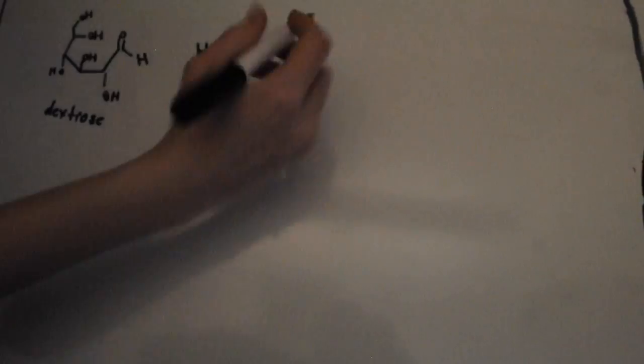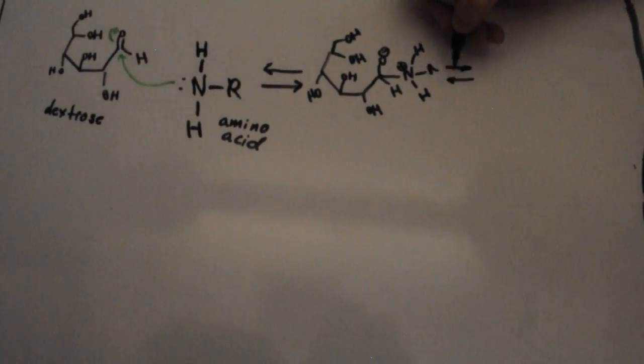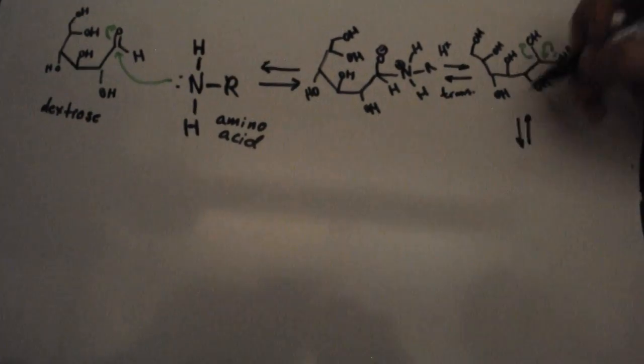The Maillard reaction begins with two reagents under heat, a sugar and an amino acid. In this mechanism, we're just going to use dextrose and a generic amino acid. The amino group of the amino acid forms an iminium ion after a 1,2 addition of the aldehyde on the dextrose molecule.